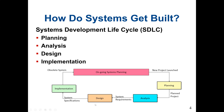After the system requirements, we move to the design phase. This is the phase where we design the system, and our product will be the system specifications. Then after we have the system specifications, we can implement and develop the system using a computer programming language. After that we do testing, then we put the system into operation. We shall go through each of these four phases in detail.